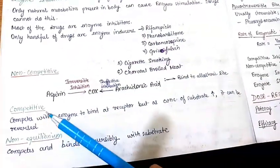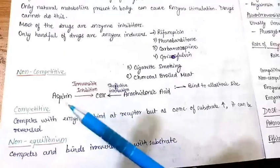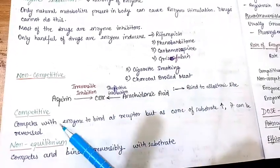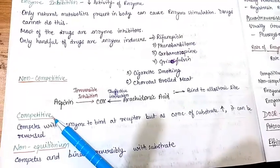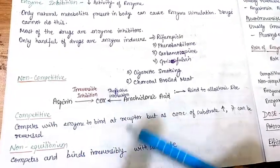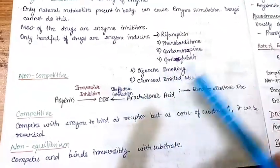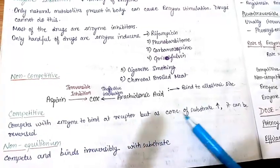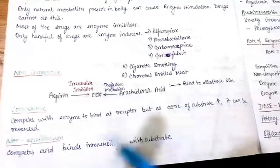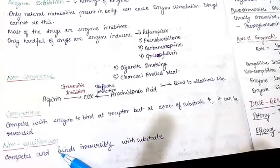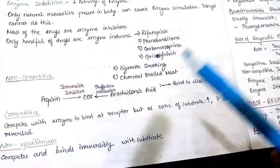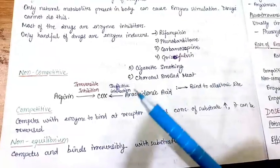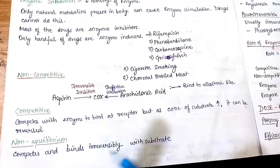In competitive inhibition, the inhibitor binds to the same site as the substrate, which is the active site. In competitive inhibition, if you increase the agonist concentration then the inhibition can be reversed — the inhibitor competes with the substrate to bind the active site but as concentration of substrate increases, it can be reversed. There is another type called non-equilibrium inhibition, in which the inhibitor binds to the same active site but binds irreversibly.